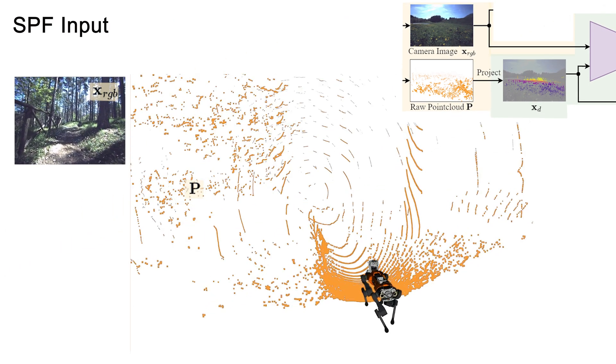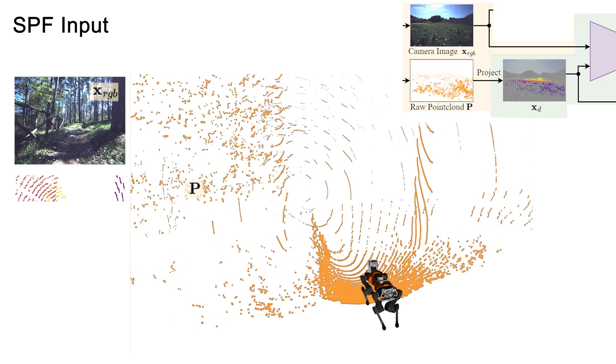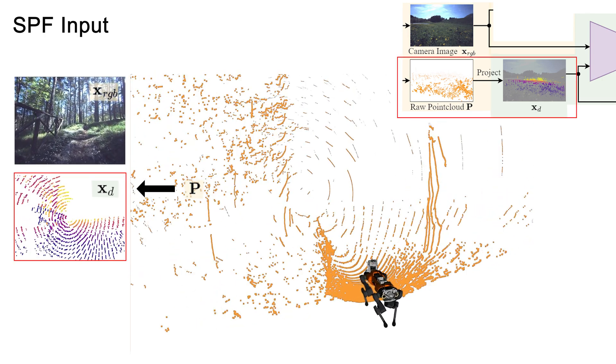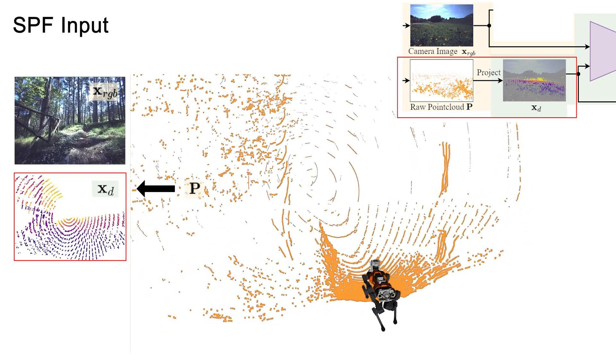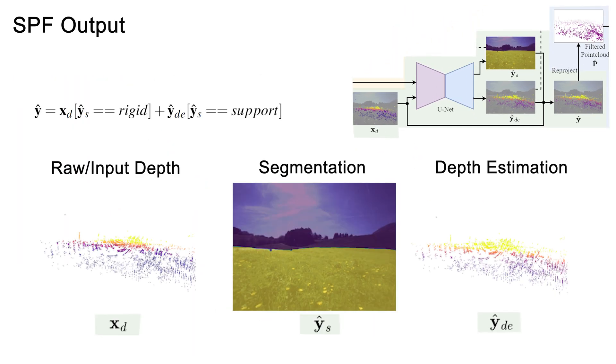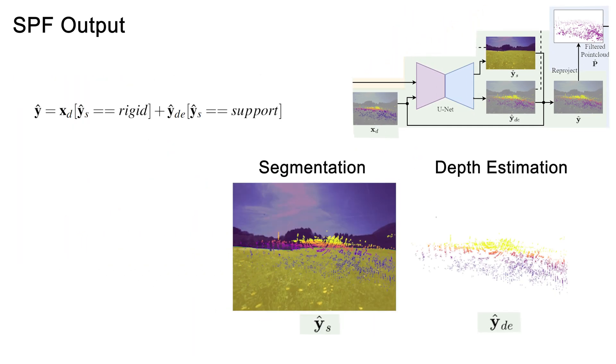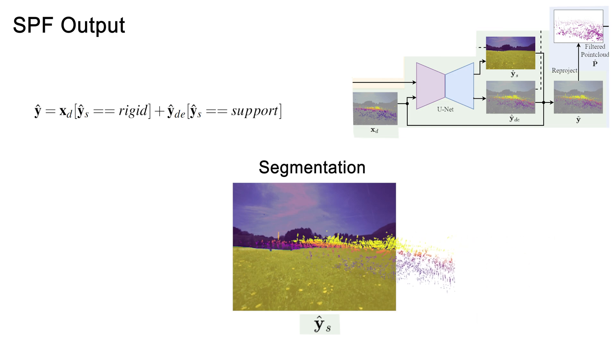To leverage the advantages achieved within monocular depth estimation and allow to connect image features to the point cloud, we project the raw point cloud onto the image plane. The final prediction is the combination of the raw point cloud and the depth estimation selected by the binary segmentation mask.